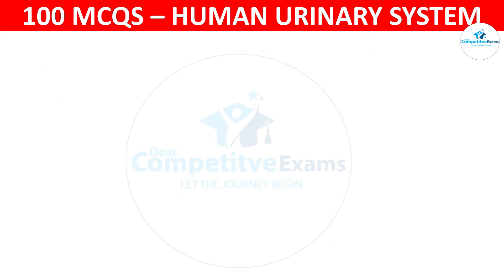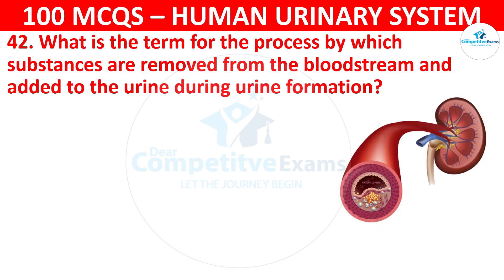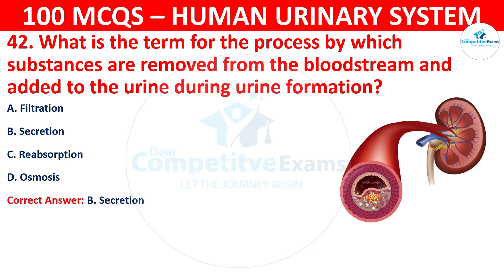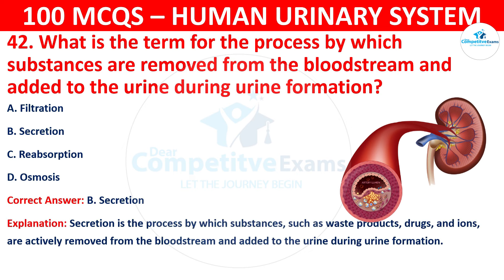Question 42: What is the term for the process by which substances are removed from the bloodstream and added to the urine during urine formation? The options are: filtration, secretion, reabsorption, or osmosis. The correct answer is B, that is secretion. Secretion is the process by which substances such as waste products, drugs, and ions are actively removed from the bloodstream and added to the urine during urine formation.